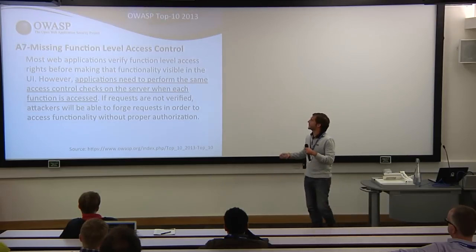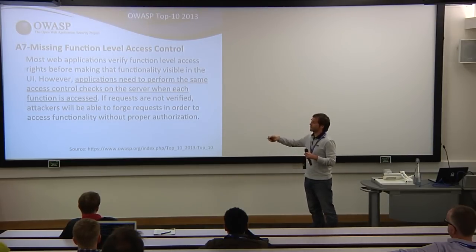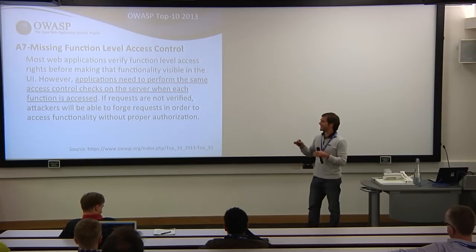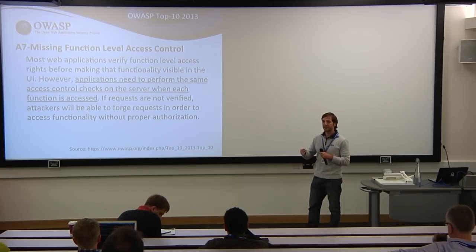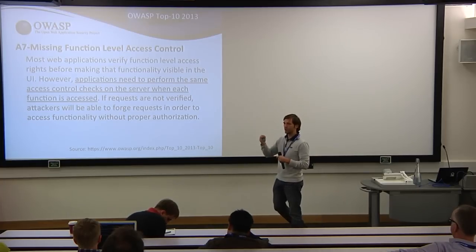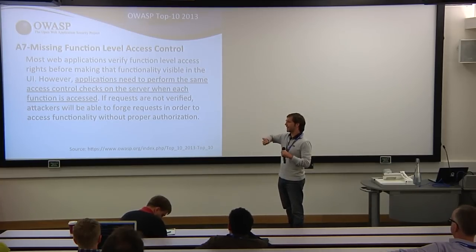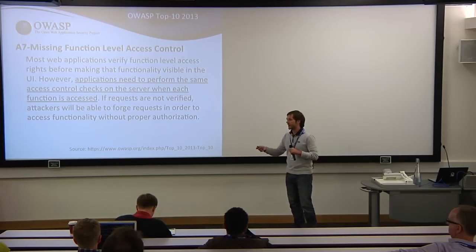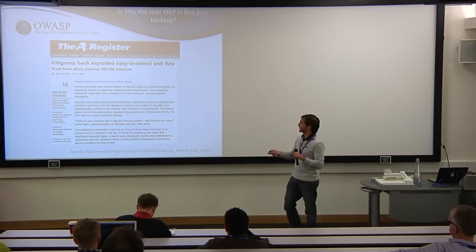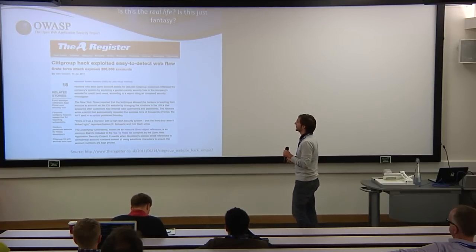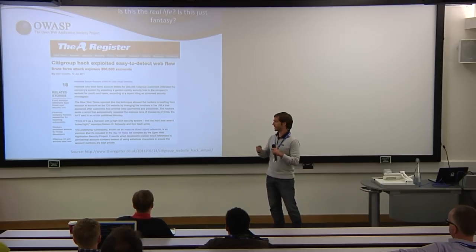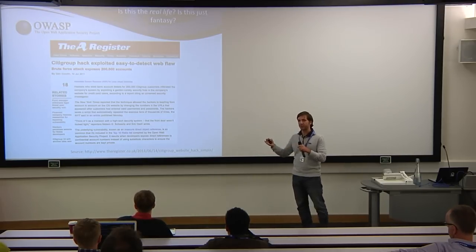A7 is Missing Function Level Access Control, which is new to last year's list. This is the exact example with the admin panel: controls are hidden in the UI based on role, but authorization checks aren't replicated in the backend. Attackers can predict the URL and access those resources. The Citibank hack in 2011 is an example — attackers changed the user ID in the URL and accessed sensitive data from other users, because function-level access control was missing.